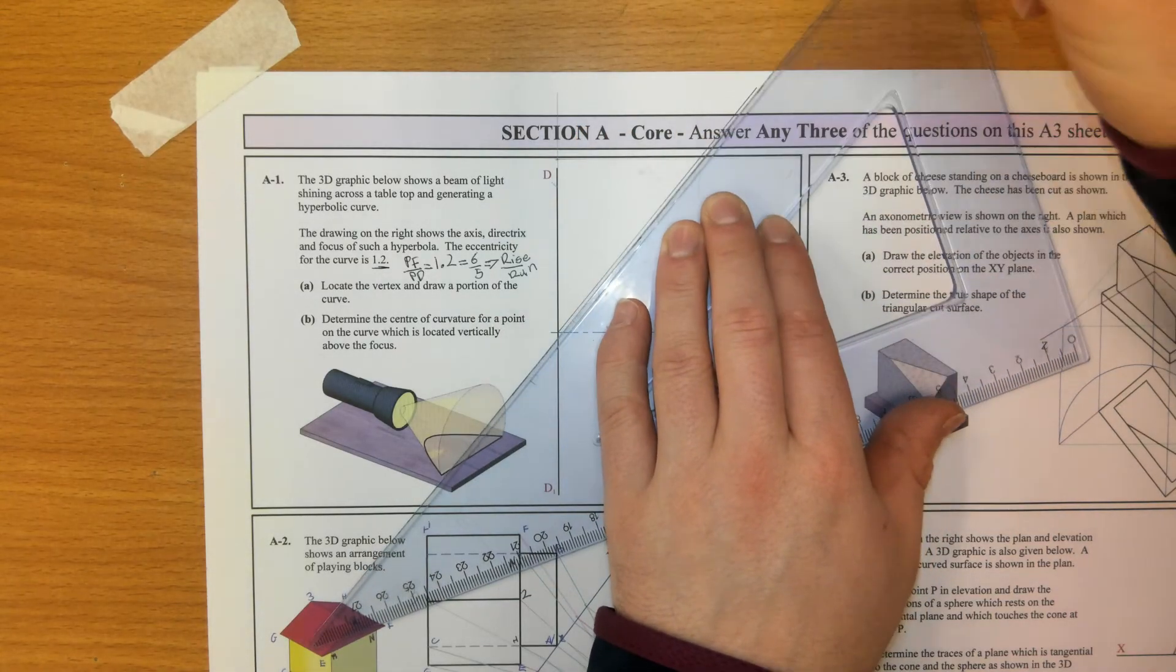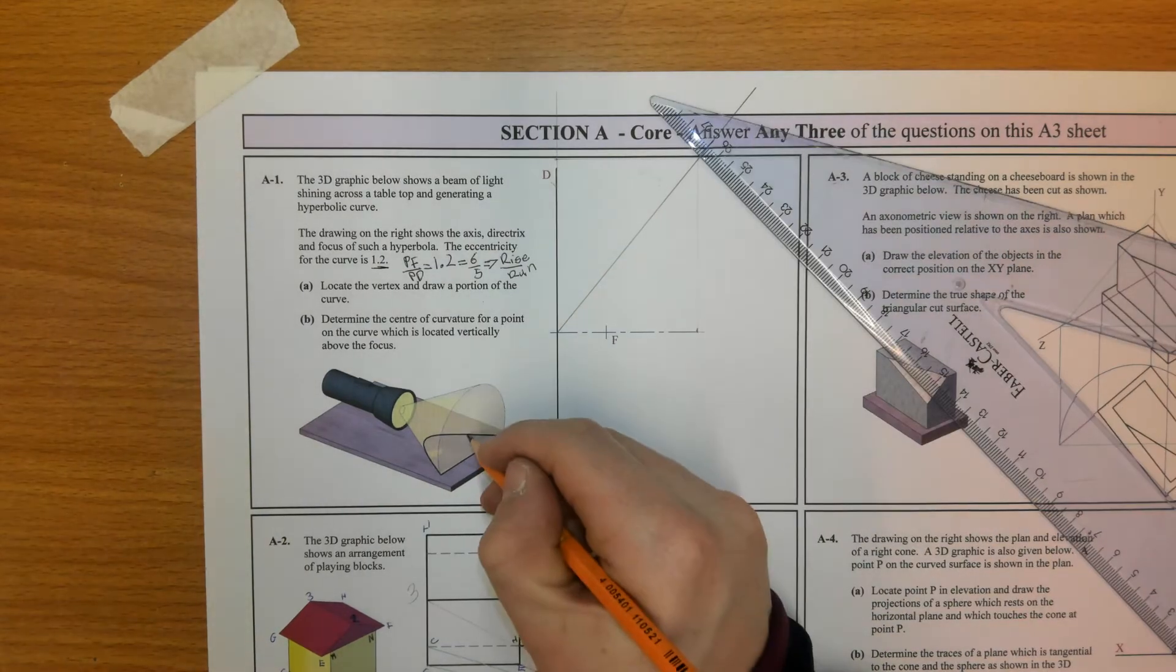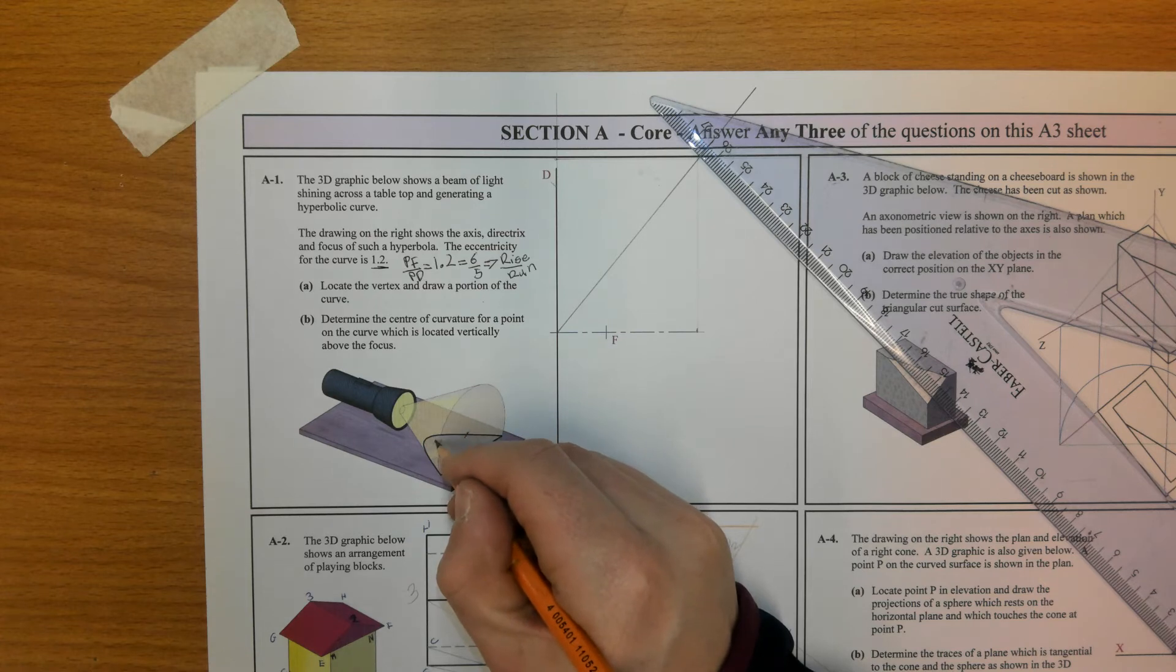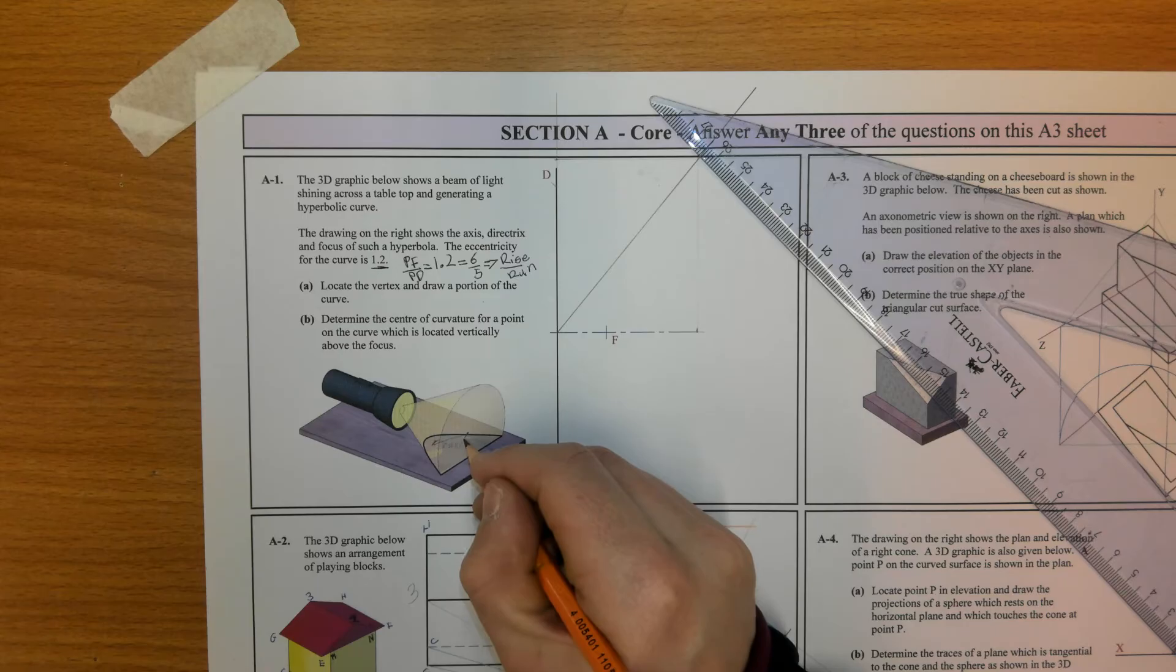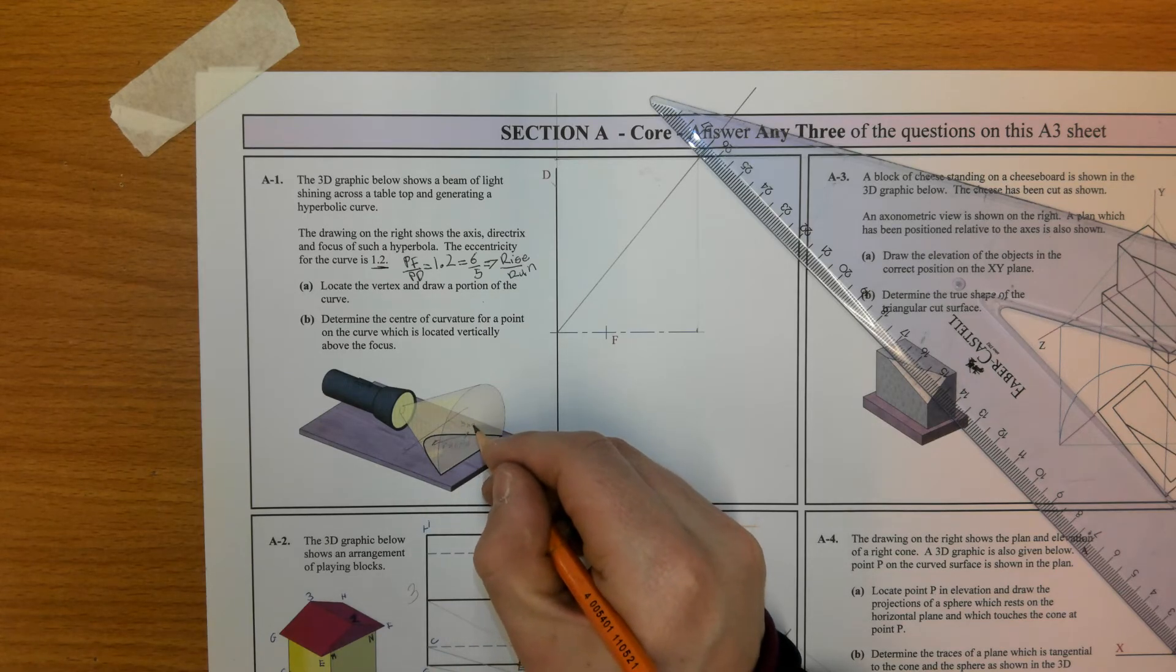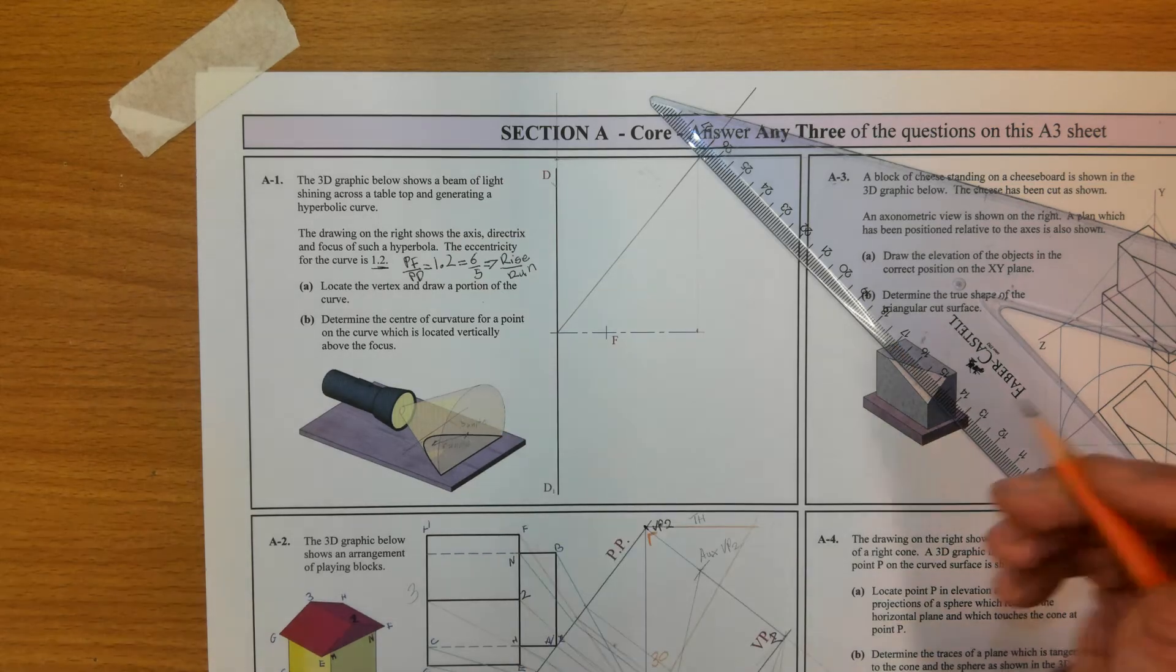Basically, any point on the curve, the distance to the focus will be 6 units, and the distance to its directrix will be 5 units. That's for any point on the curve.